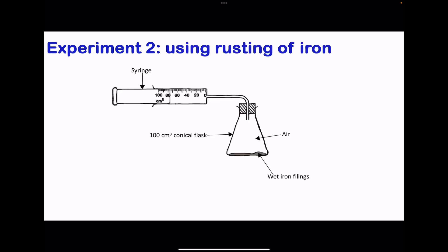Another experiment that can be done is this one, the rusting of iron. In this experiment, we're going to begin with a syringe containing air. This air is going to contain some oxygen, and then we'll put some wet iron filings. This is the iron that is going to be rusted. Remember, for rusting to occur, we need water and oxygen, so the oxygen is going to come from the air. This is going to be a 100 centimeters cubed conical flask. This conical flask is going to be sealed at the top so that air cannot enter to interfere with the experiment.